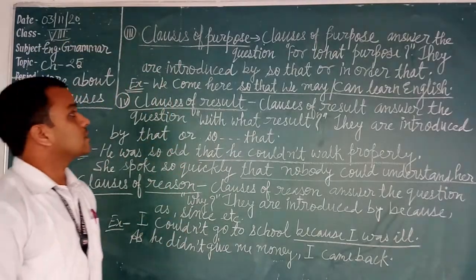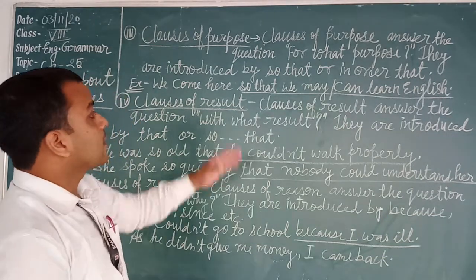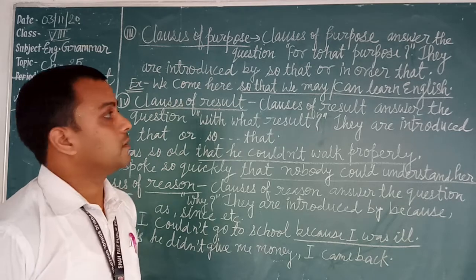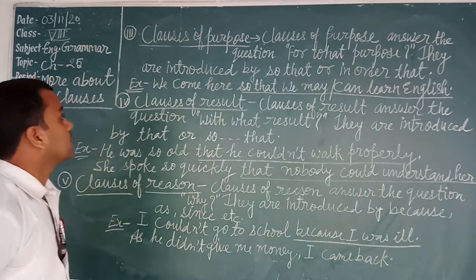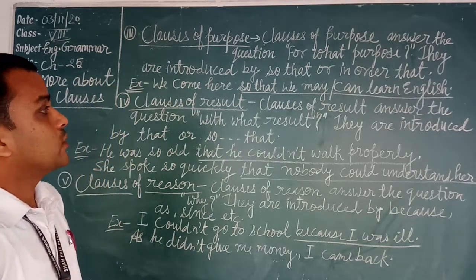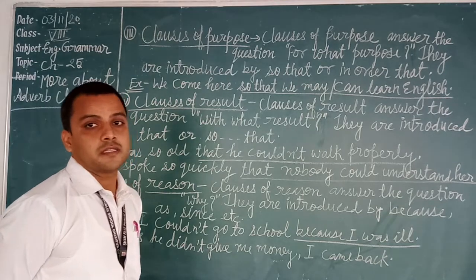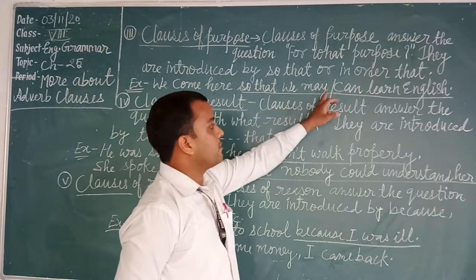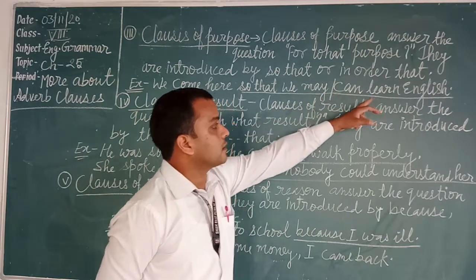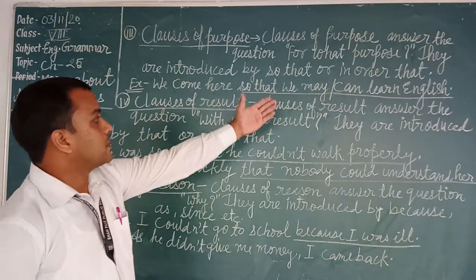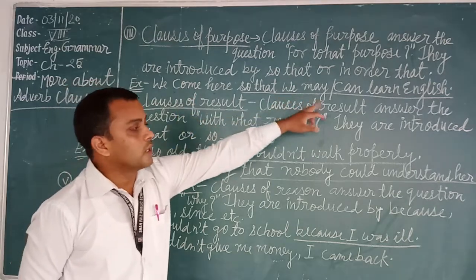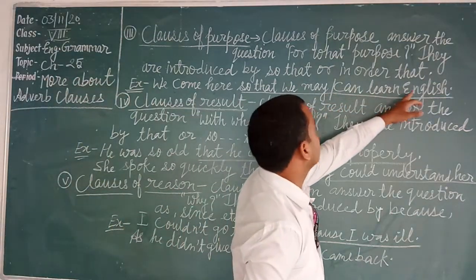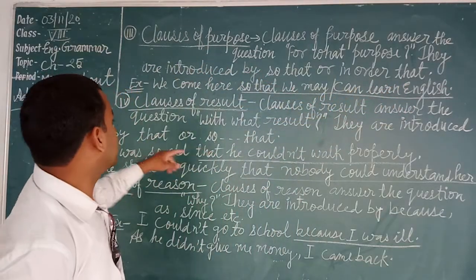Now the third kind: clauses of purpose. A clause of purpose answers the question 'for what purpose.' They are introduced by 'so that' or 'in order that.' For example: 'We came here so that we may learn English.' The phrase 'so that we can learn English' shows a clause of purpose.